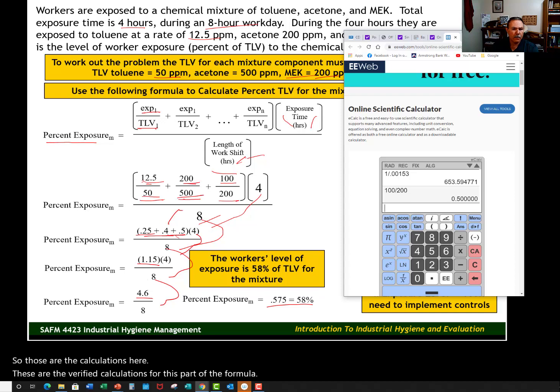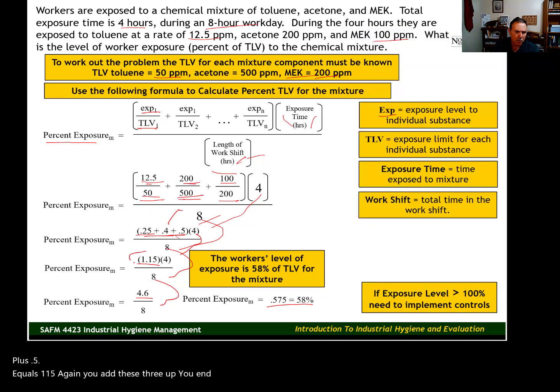Now the next step is to add up all of those decimals. We're going to add these three numbers: 0.25 plus 0.4 plus 0.5 equals 1.15. Again, you add these three up, you end up with 1.15.